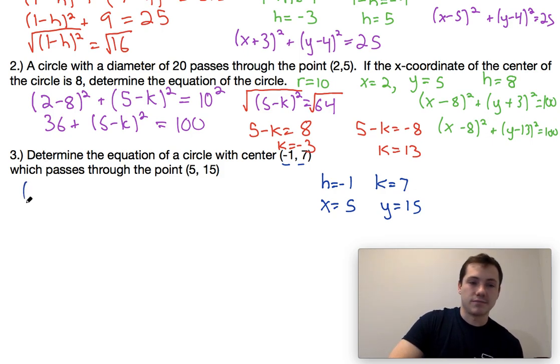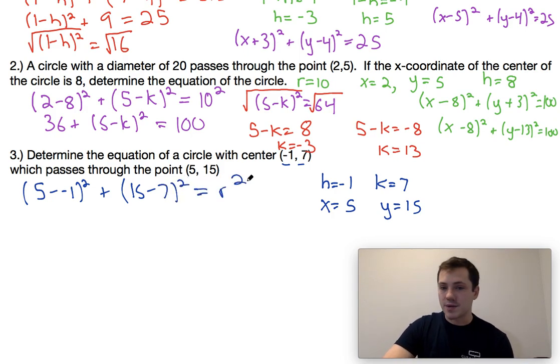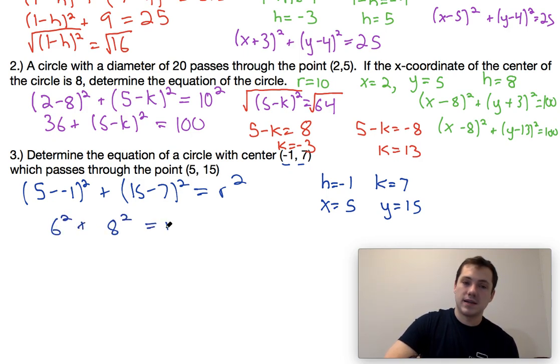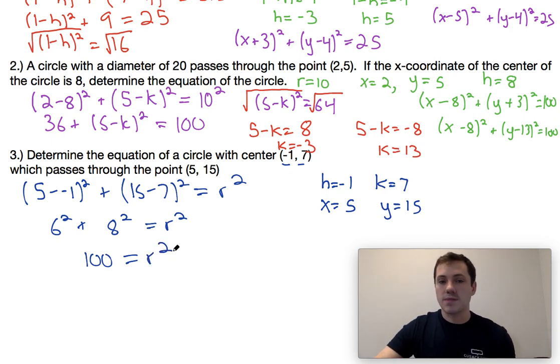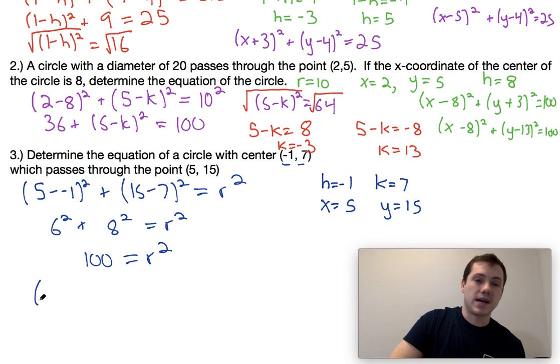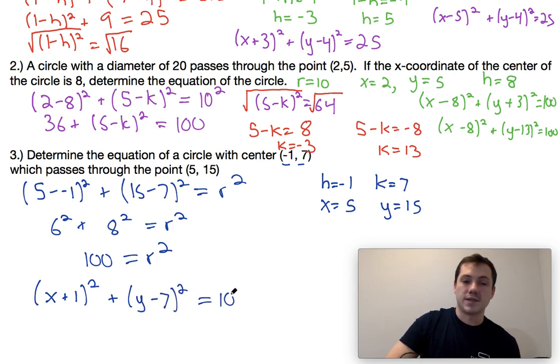So again, plug it into our equation. We would end up with 5 minus negative 1 squared plus 15 minus 7 squared is equal to r squared. So this would be 6 squared plus 8 squared equals r squared and ends up giving us 36 plus 64, so 100 is equal to r squared. Now, I could choose to solve this for r, but that actually serves no purpose because in our final equation, we put r squared on the right side.